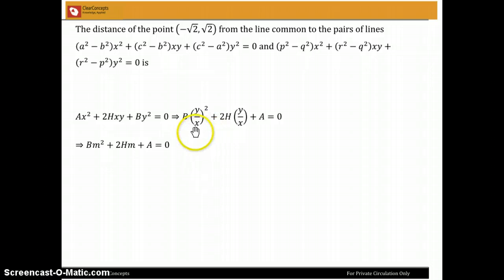So then if you remember we replaced Y by X with M and we got this equation BM squared plus 2HM plus A is equal to 0.